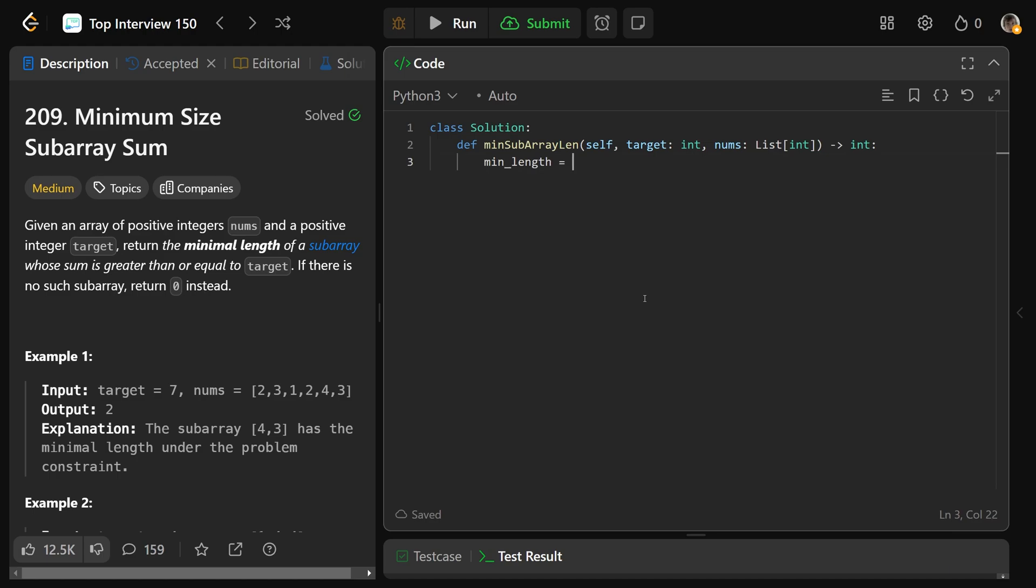So we're going to get our min length, which is initialized at infinity. Our current window sum is just 0. And we'll initialize L as 0. And we'll actually use a for loop over R. So we'll do for R in the range of the length of the numbers. So R's job is to expand the window. So our sum is going to go up by nums at R. And then while we're hitting our constraint, so while our sum is at least the target, in that case, we have a current valid window. We need to write this down to see if we got a better one. So we'd set min length equal to the minimum of itself and the current window length, which we can get by R minus L plus 1.